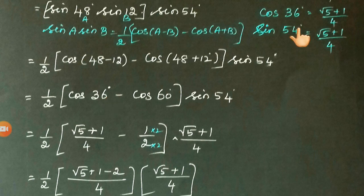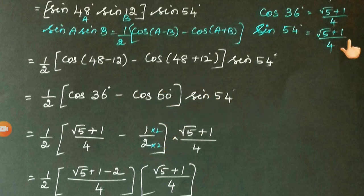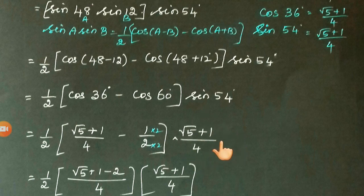And cos 36°, you know the value is (√5 + 1)/4. So write that here minus cos 60°. This value you know well: cos 60° is 1/2, times sin 54°, which is (√5 + 1)/4.